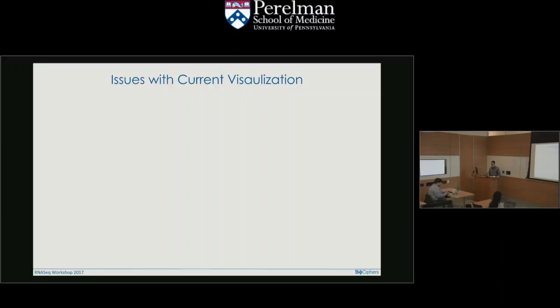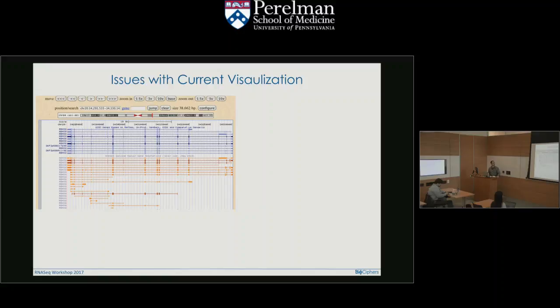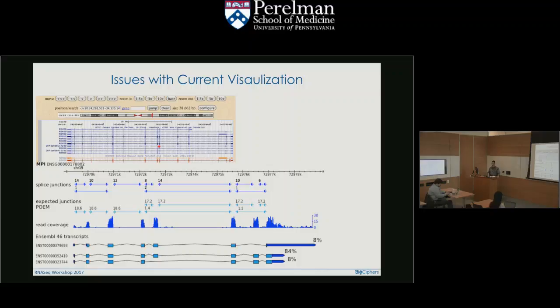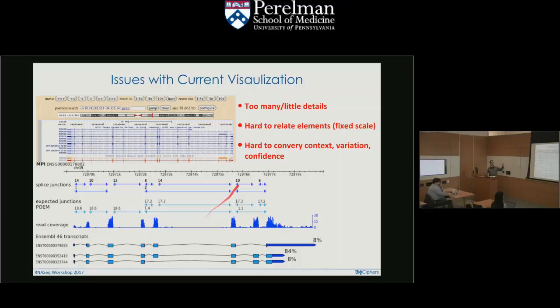Issues with current visualization: it's usually done linearly in the genome browser where you see reads mapped and junction-spanning reads with numbers, and isoforms at the bottom. This is not very readable if you want to compare conditions. Specifically: there's either too many or too little details, it's very hard to relate elements, it's always in fixed linear scale so introns are huge and exons are tiny, and it's very hard to convey context, variations, and confidence.